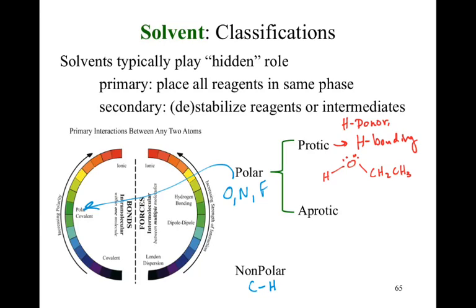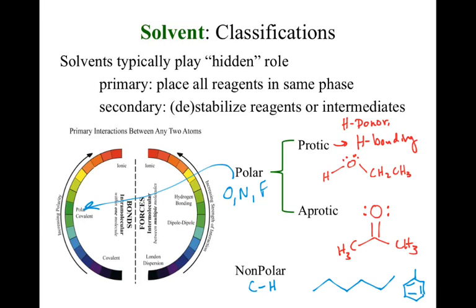What happens if we move to an aprotic solvent? We still need to be polar, so we still need an electronegative element like oxygen, but it can't be attached to a hydrogen, because if it is, it's now protic. A good example is acetone — a great aprotic solvent, because we have that electronegative oxygen attached to a less electronegative carbon, giving us the polar aspect without hydrogen bonding ability. In a nonpolar solvent, we need no oxygens or nitrogens — examples would be hexane or toluene, a benzene ring with a methyl group.